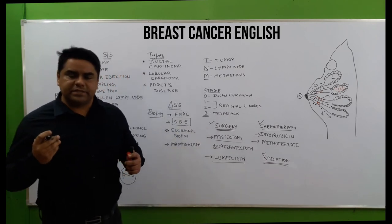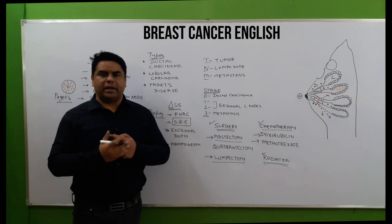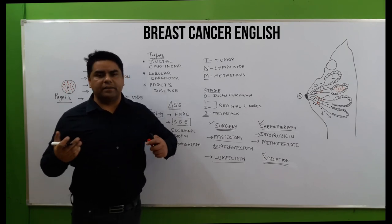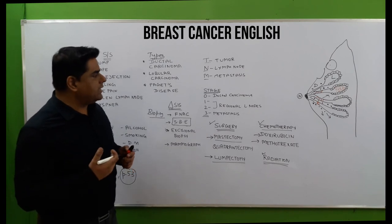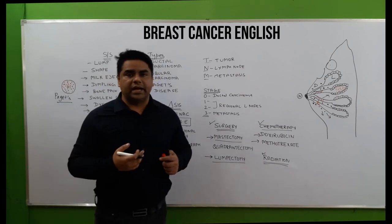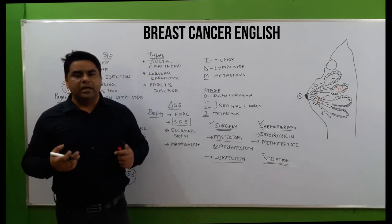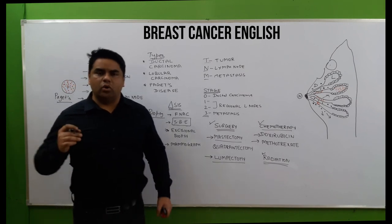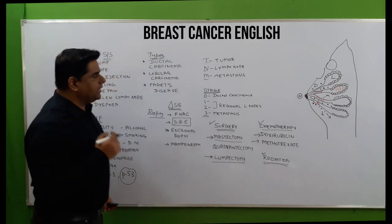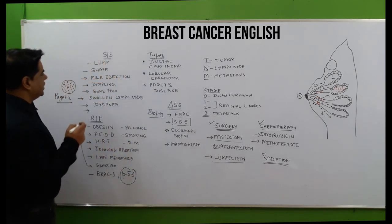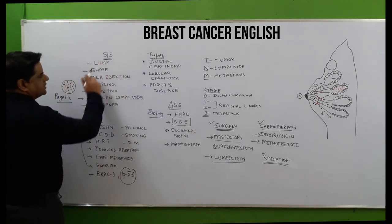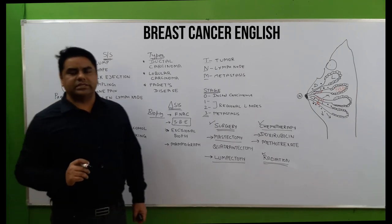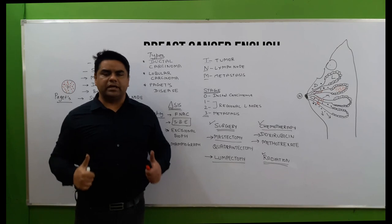Use a thimble when stitching for protection. Apply hand creams several times a day over the hands. In case of any inflammation at the surgical site, it should be immediately reported to the healthcare provider. This video covered all aspects related to breast cancer.